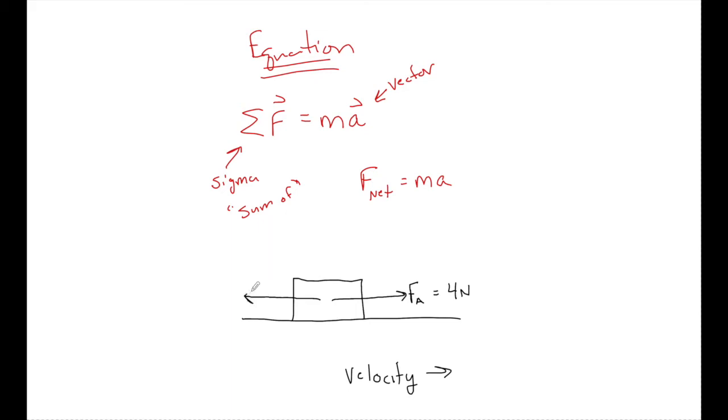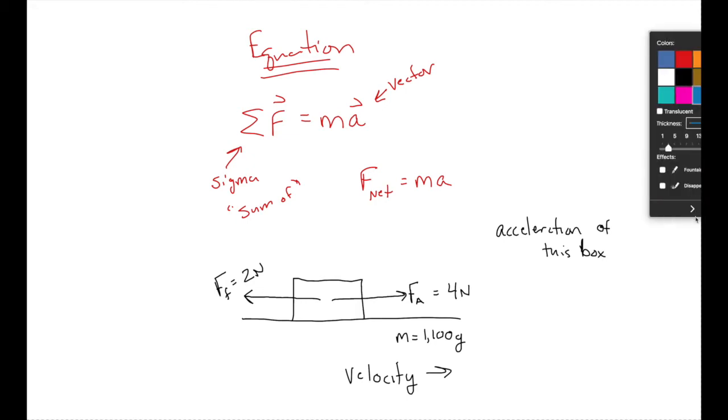And I'm going to tell you that there is a friction force. If you're not up to friction in your course, that's no big deal. Just know that friction is a force that opposes motion for now. That is equal to two newtons. And I also know that this box has a mass of 1100 grams. Now with this information, I can find what is the acceleration of this box. And to do so, it's really just a two-step process.